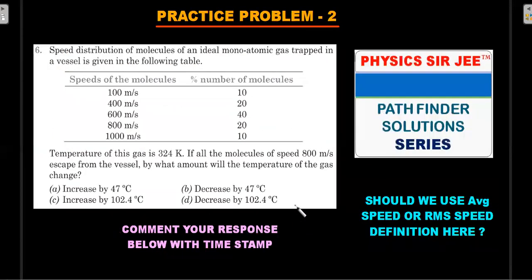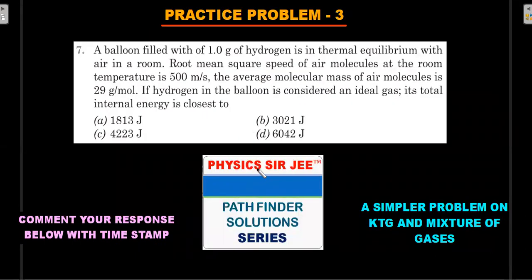Here's the practice problem two. I picked up a nice little JEE Advanced question from Pathfinder Solution Series MCQ. This question you need to understand what's the difference between usage of average speed and rms speed definition here. If you use average speed you'll get a different answer and rms a different one. Which one to be used and why should give you a good understanding. It's not about getting the answer, it's about understanding the concept. Comment your response below with the timestamp.